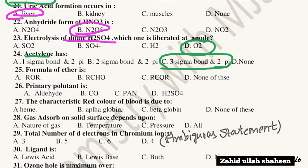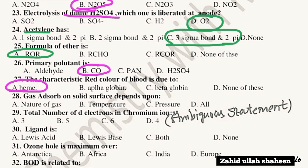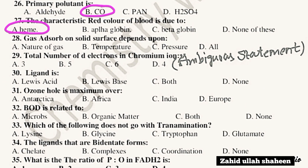The ether formula involves two different R groups — R-O-R. Question 26: Primary pollutants include CO. CO and CO2 are primary pollutants. Question 27: The characteristic red color of blood is due to heme.